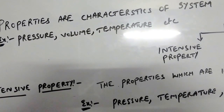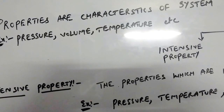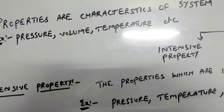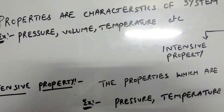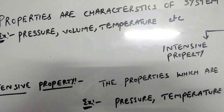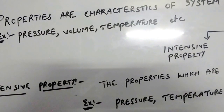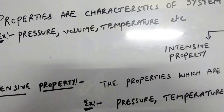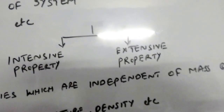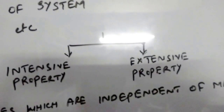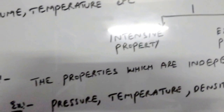Consider hydrogen gas in a rigid container or a cylinder. We define that hydrogen gas with the pressure of the hydrogen gas — it is a property; the volume of the hydrogen gas — it is a property; and the temperature of the hydrogen gas — these are the properties.